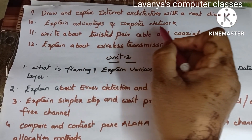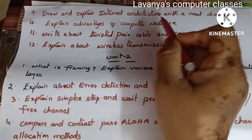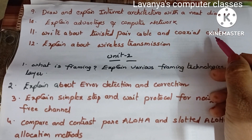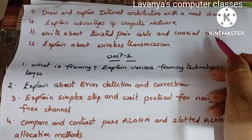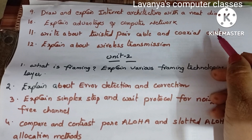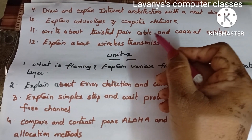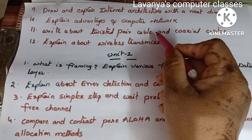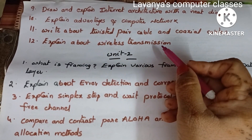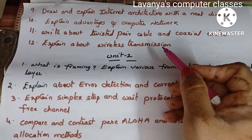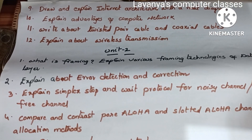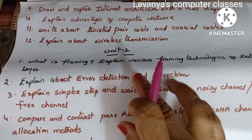Explain the advantages of computer networks. Write about twisted pair cable and coaxial cable — very important questions. Next, explain about wireless transmission. These cover both wired and wireless transmission media. These are the Unit 1 questions; a few more exist but all are simple.